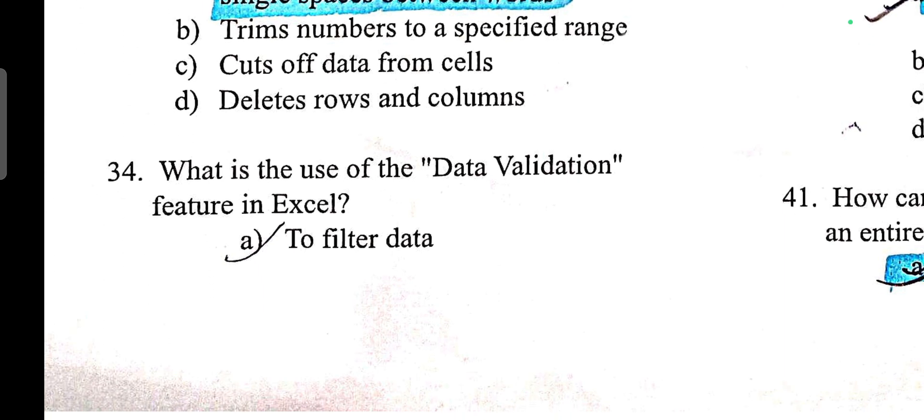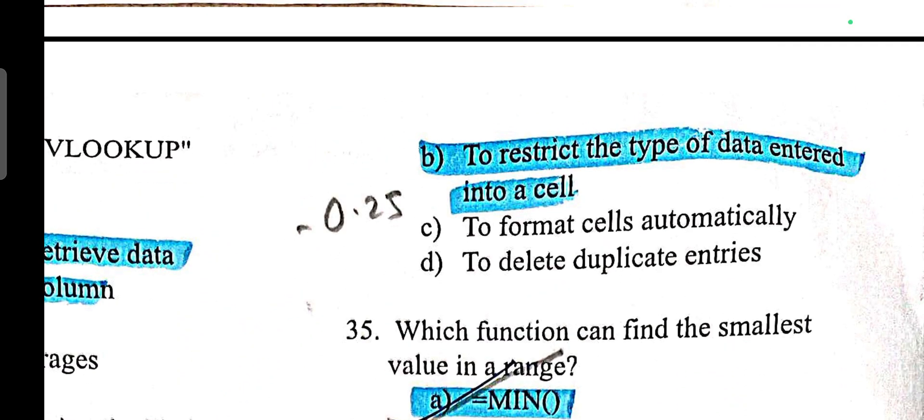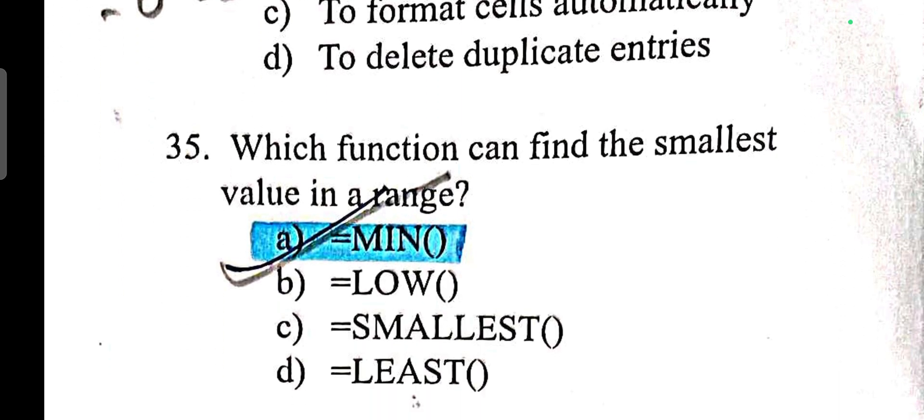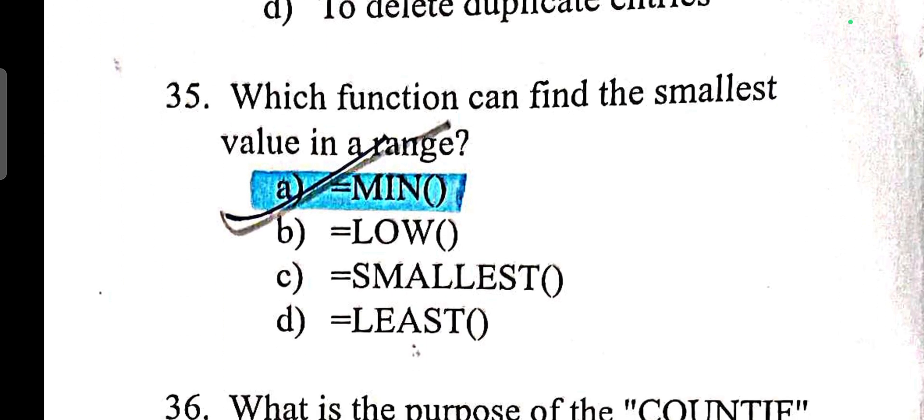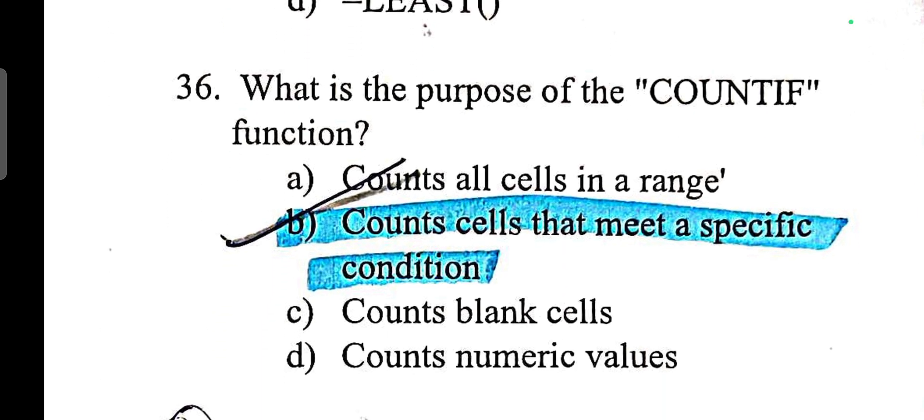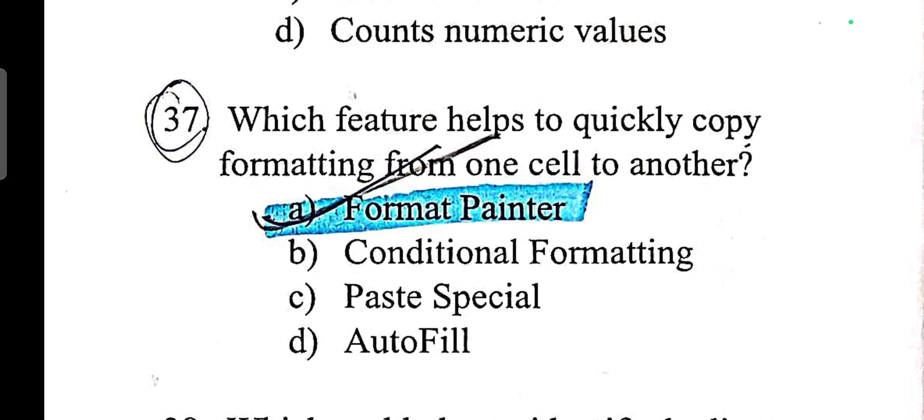What is the use of data validation? Answer is to restrict type of data entered into a cell. Which function can find the smallest value in a range? Minimum. What is the purpose of count if function? Count cells that meet a specific condition. Which feature helps to quickly copy formatting from one cell to another? Format painter.